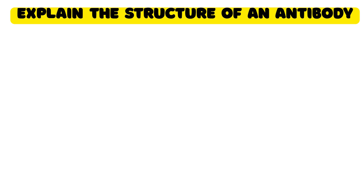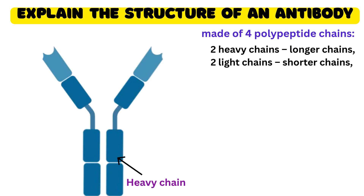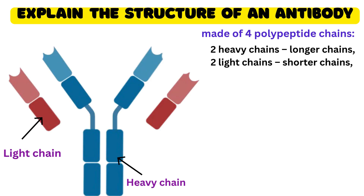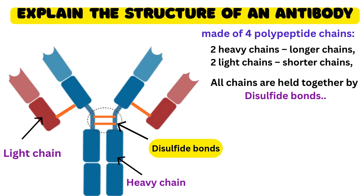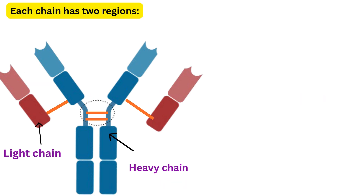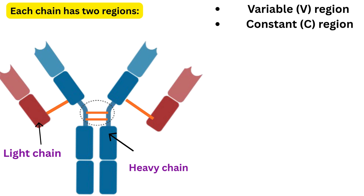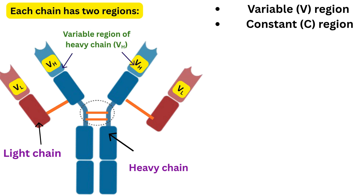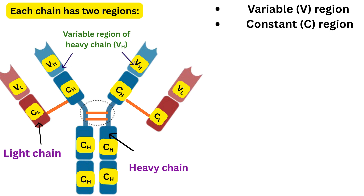An antibody is made up of four chains — two heavy chains and two light chains. These chains are joined together by disulfide bonds. Each chain has two regions: the variable region and the constant region. The variable regions are present at the tips of the heavy and light chains, and the constant regions are present in the remaining part of the chains.